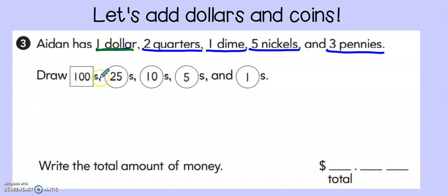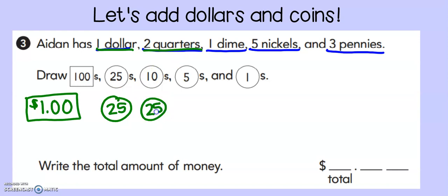It has us draw a box with 100 in it. You can either write 100 or sometimes I like to go like this and I actually write $1. That's okay, too. Now, I need two quarters. To draw those two quarters, I'm going to do two circles with 25 because quarters are worth 25, one dime, five nickels, and three pennies.